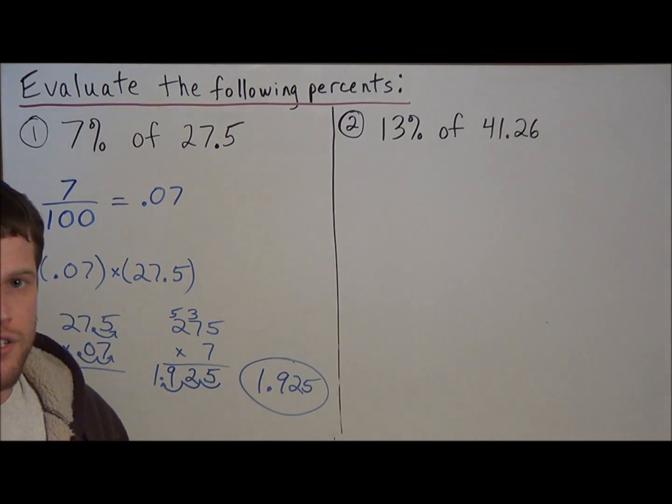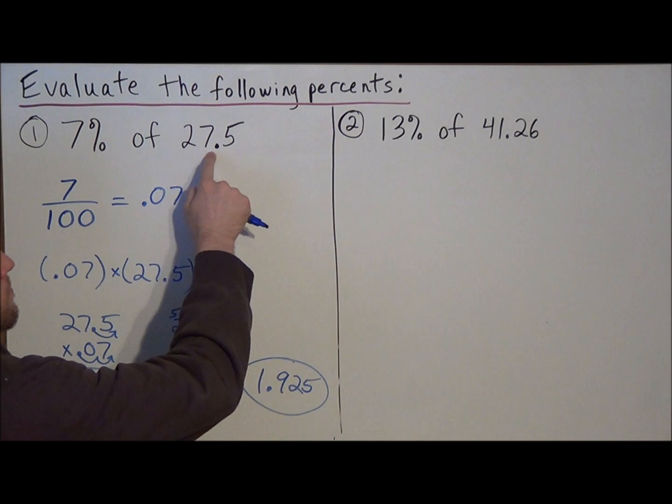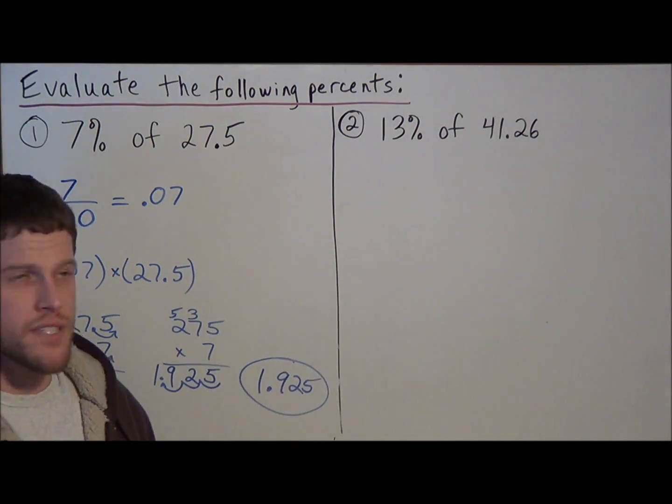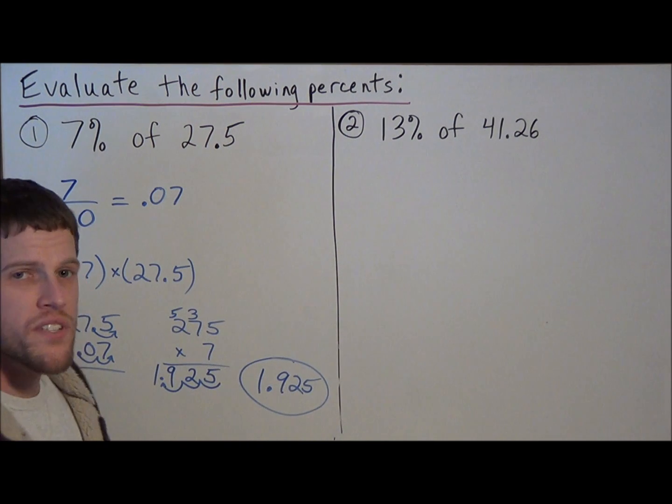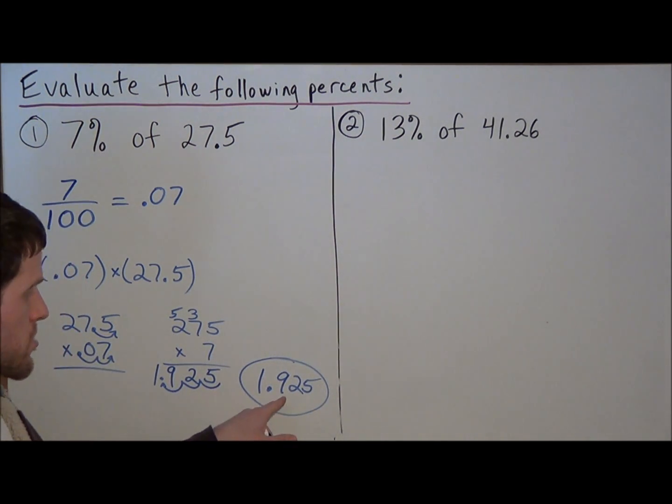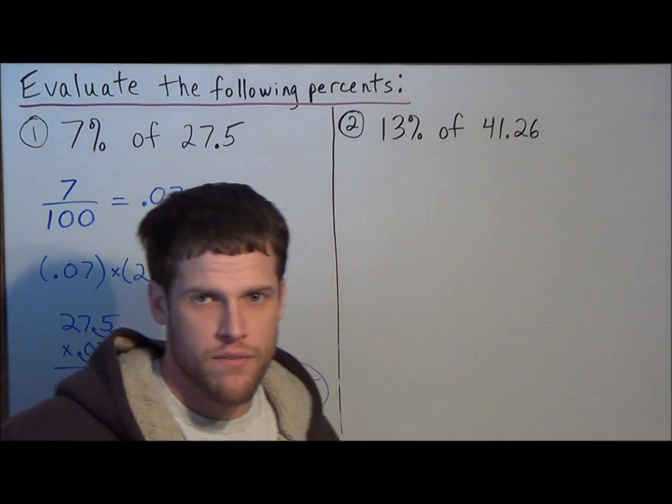One estimation strategy you can use: notice 7% is really close to 10%, and if we were to take 10% of 27.5, all we would have to do to find 10% is move the decimal once to the left, which would give us 2.75. So it's good that our answer is close to 2.75, because if it was that far off, we would know we'd have to try it again.